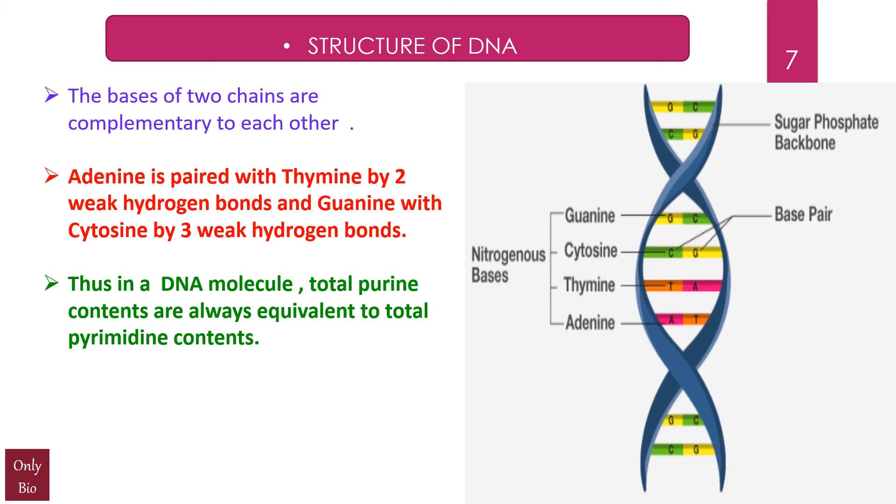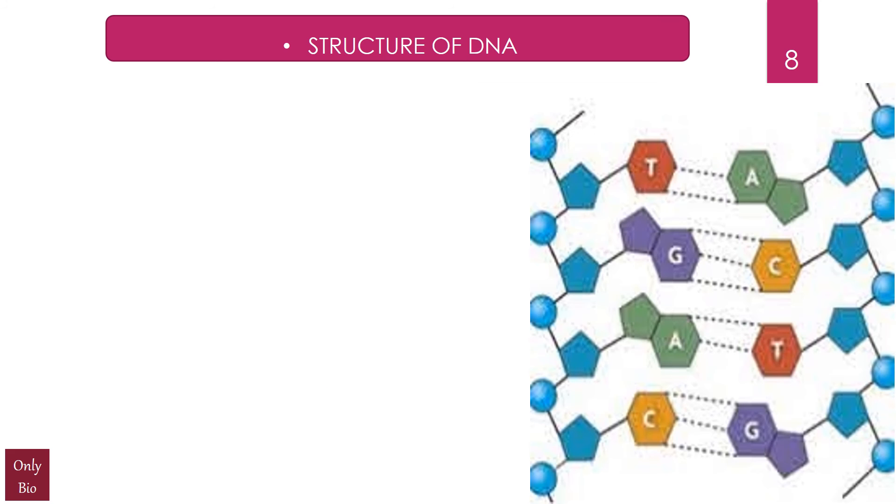Thus, in a DNA molecule, total purine contents are always equivalent to total pyrimidine contents. In other words, they are equal, so the total number of purines is equal to total number of pyrimidines. The planes of bases are nearly at right angles to the helix axis. The diameter of the helix is always 20 Angstrom units. Friends, these dimensions are worth remembering because they're often asked in different competitive exams.